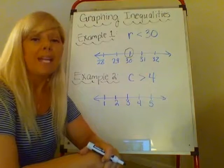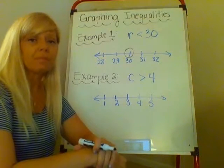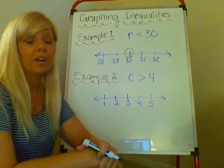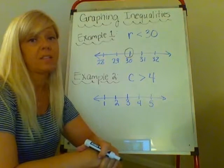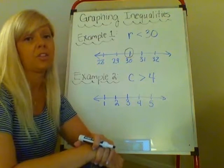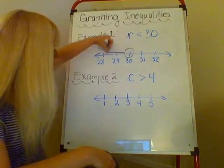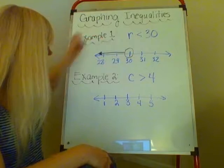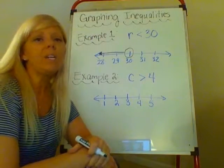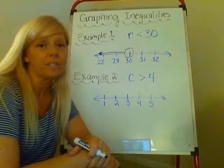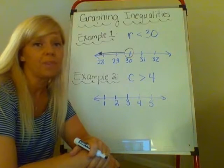Then any number that is less than 30 is the direction I'm going to draw my arrow. So I know that 29 is less than 30, 28 is less than 30. So when I take my arrow I'm going to go towards those numbers. And that is how I show all my solutions that are less than 30.